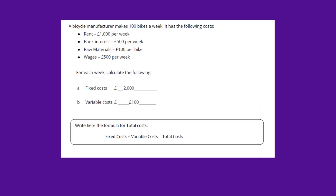Moving on — a bicycle manufacturer makes 100 bikes a week. It has the following costs: rent £1,000 per week, bank interest £500 per week, raw materials £100 per bike, and wages £500 per week. We're going to look at rent being fixed, bank interest fixed, and wages fixed. So we've got £1,000 plus £500 plus £500, making £2,000.